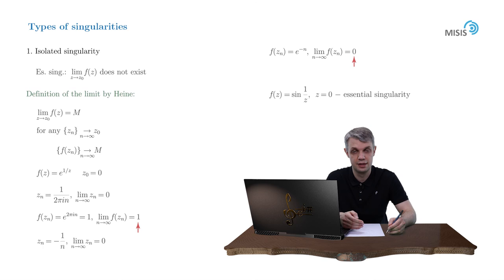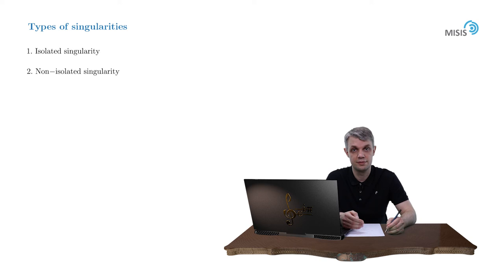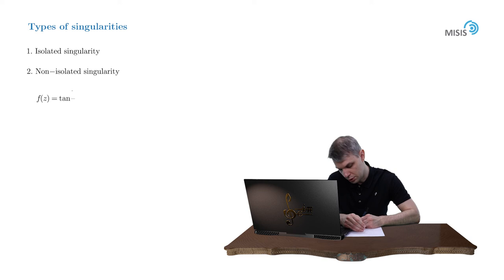Unfortunately, non-isolated singularities do not admit of such a nice classification. So instead of discussing them, let me give you a simple example. Let's consider f(z) = tan(1/z). As you remember, tangent is singular if its argument equals π/2 + πn, where n is an arbitrary integer. So z_n = 1/(π/2 + πn) can be checked to be simple poles of this function.